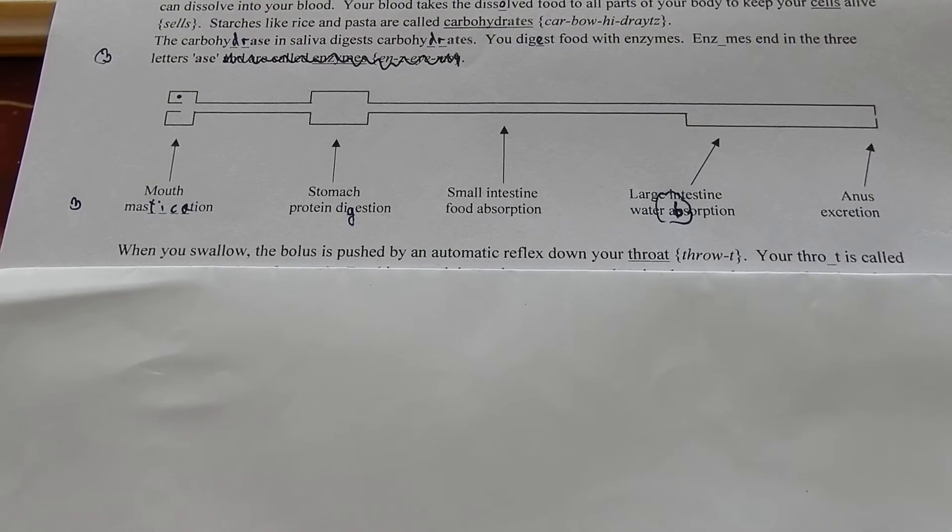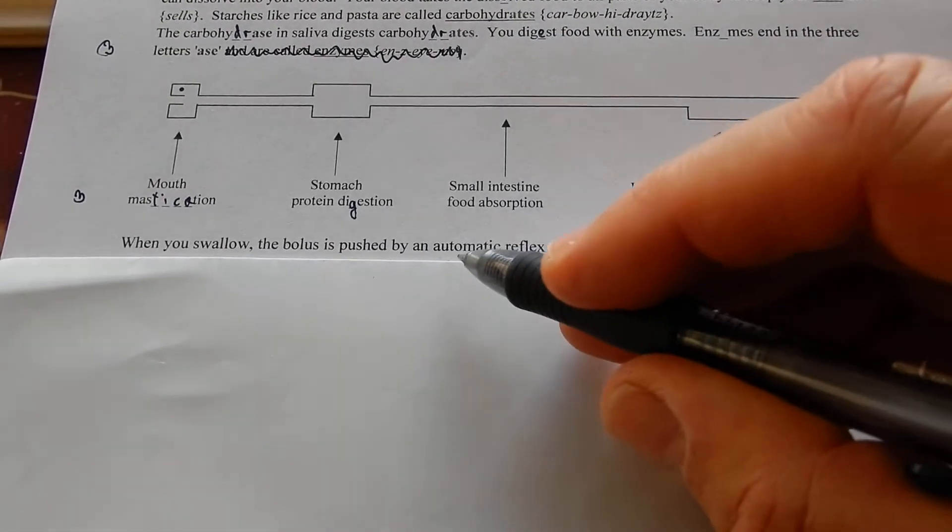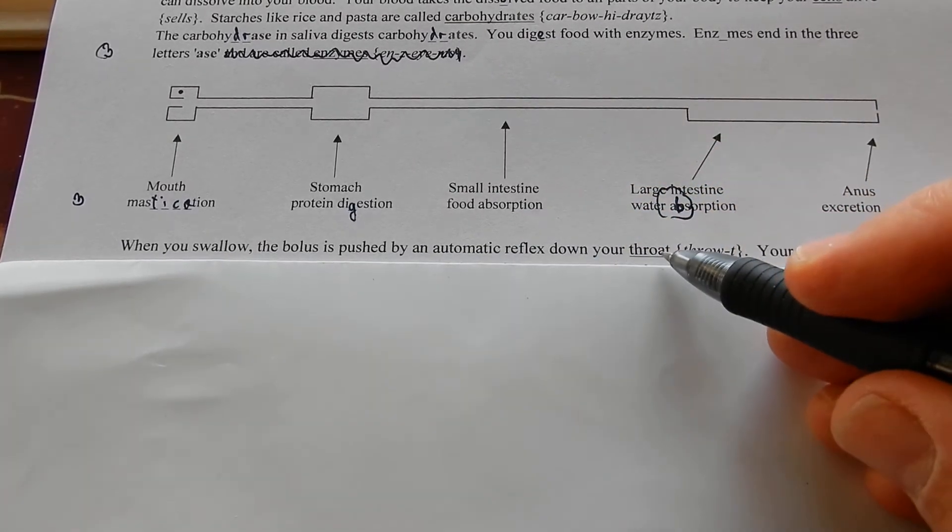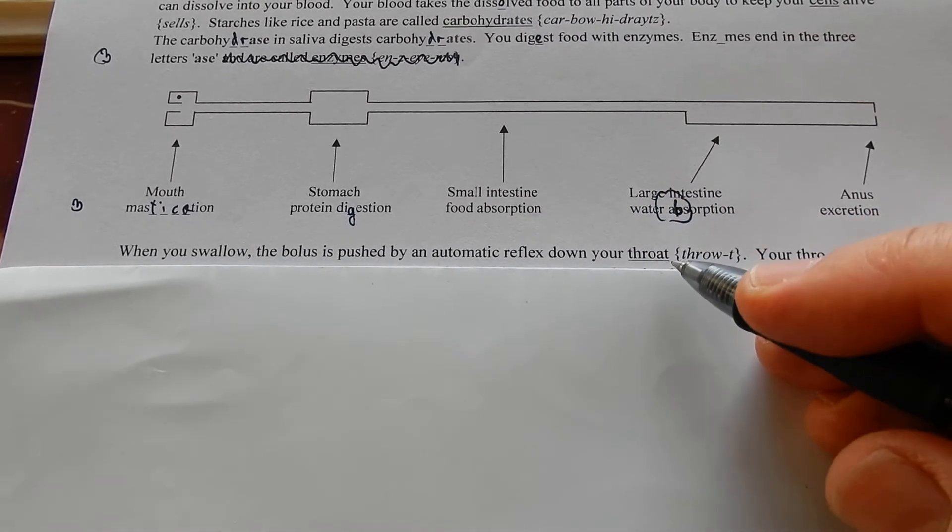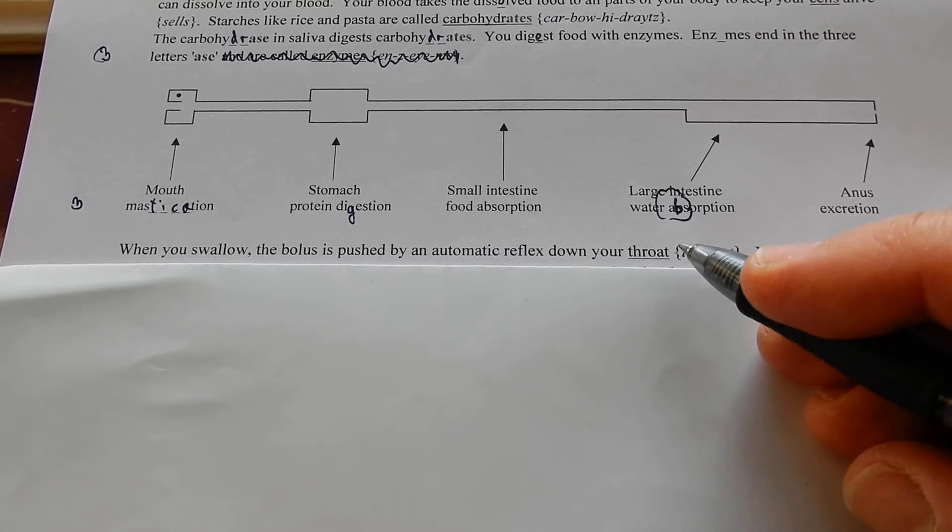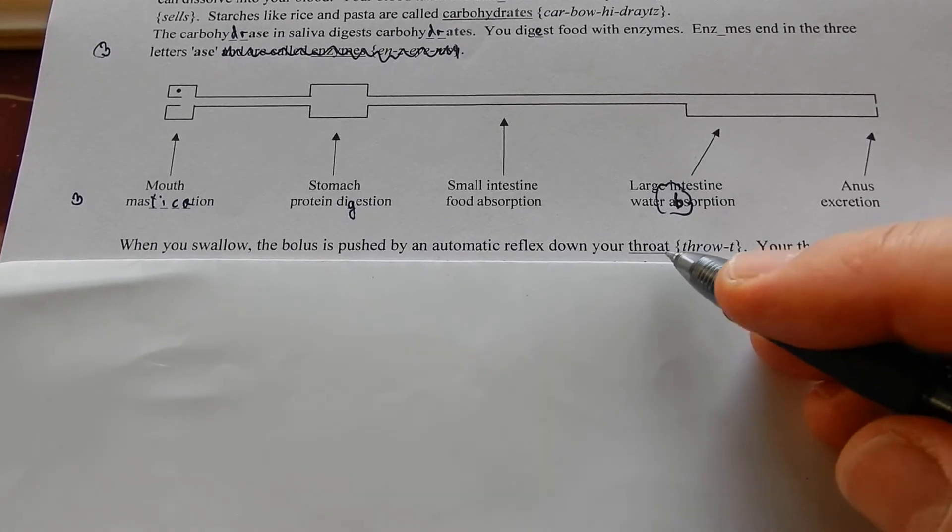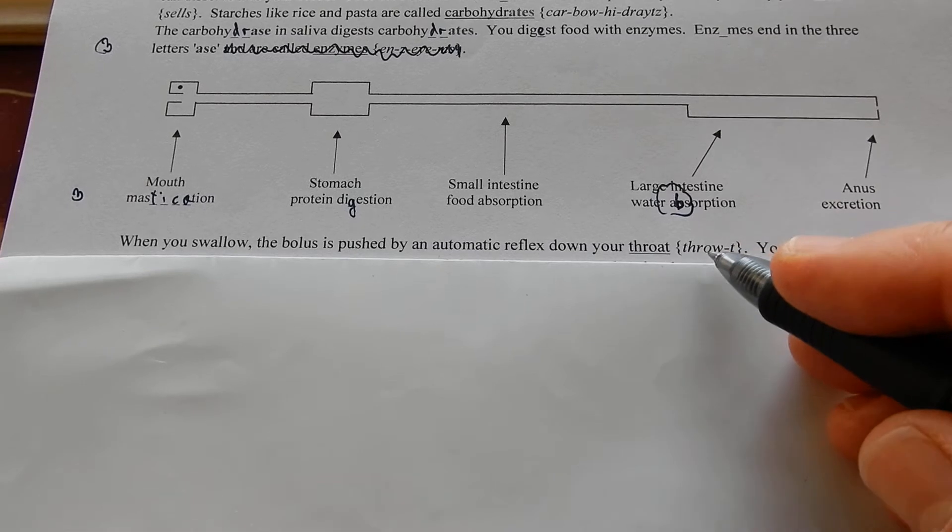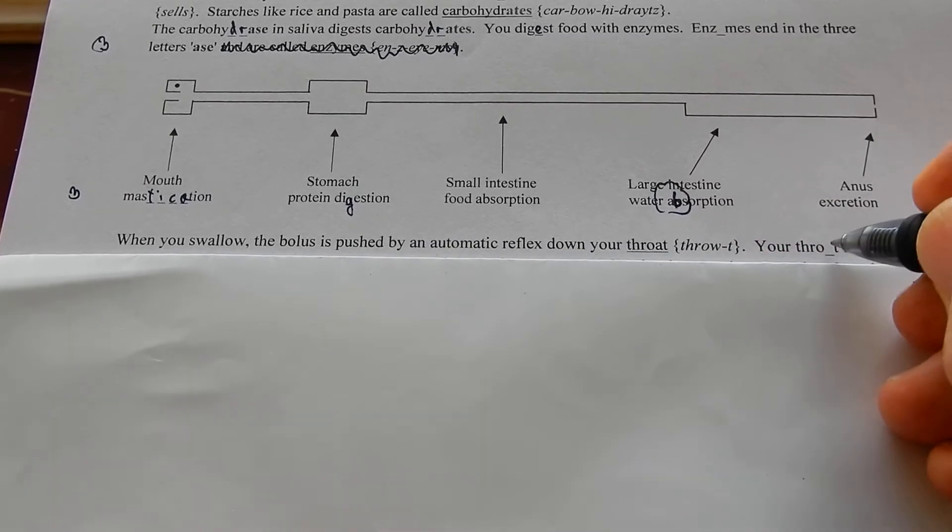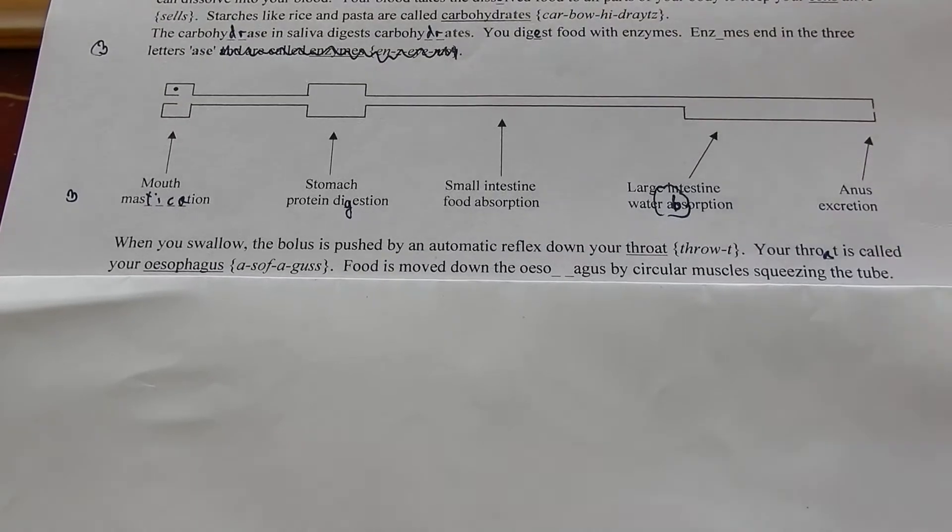When you swallow, the bolus is pushed by an automatic reflex down your throat. That's why you can bend right over and eat a sandwich, and the sandwich is going up against gravity. Your throat is called your esophagus.